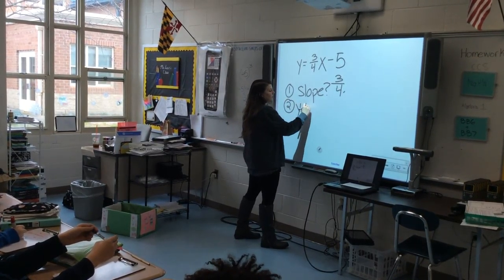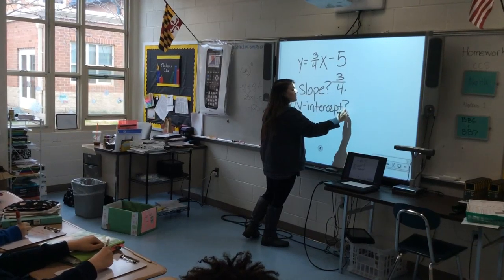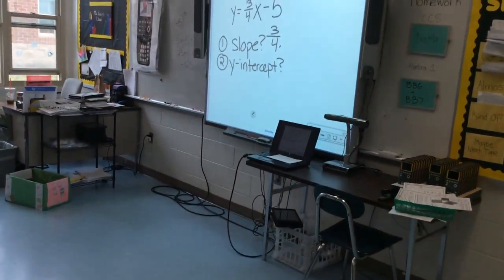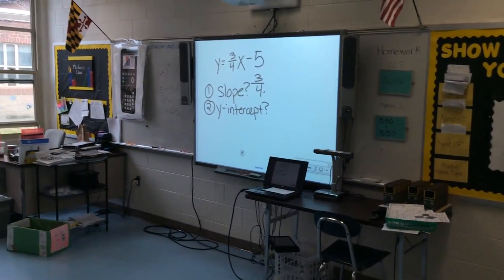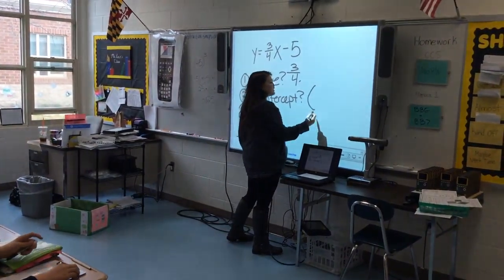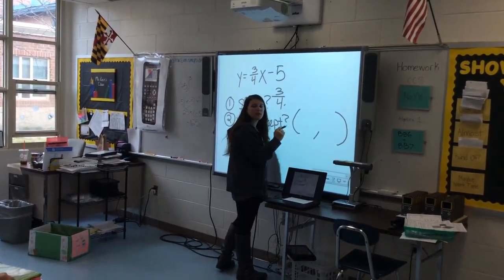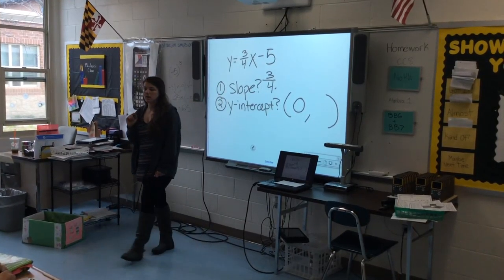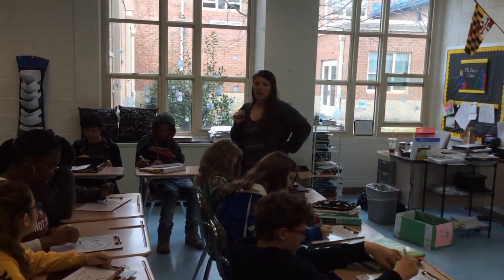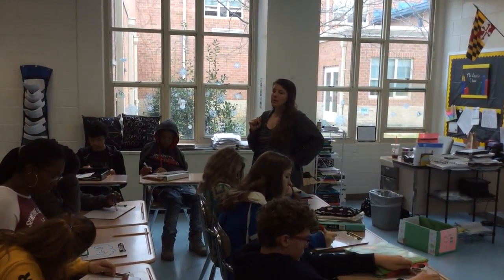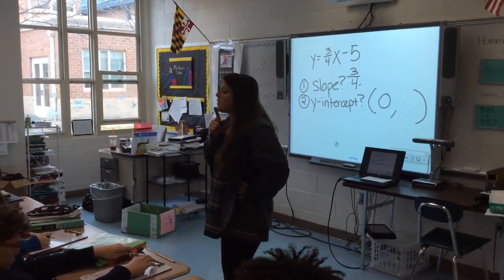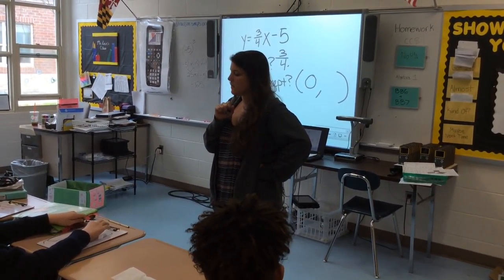And what do you think my second question will be? What is the Y intercept? So we're going to write that on your board. Remember, how do we write a Y intercept? As a coordinate. So we can't just have one number — we should have parentheses, a comma, parentheses. What should our first number always be? Zero. So you need to fill in that blank.